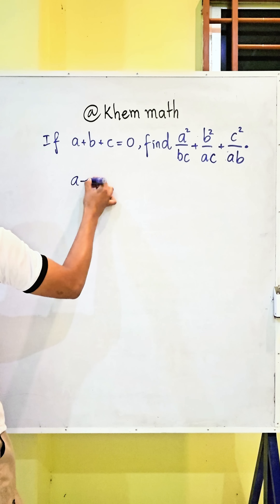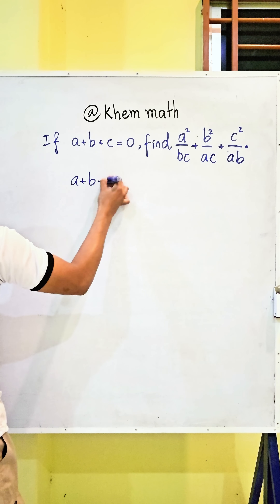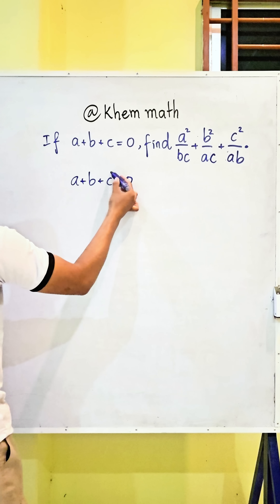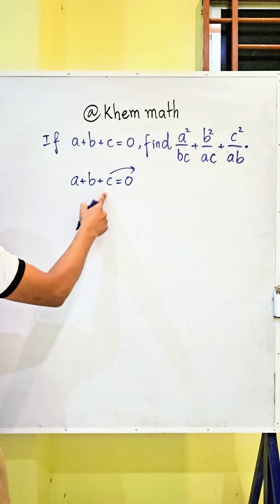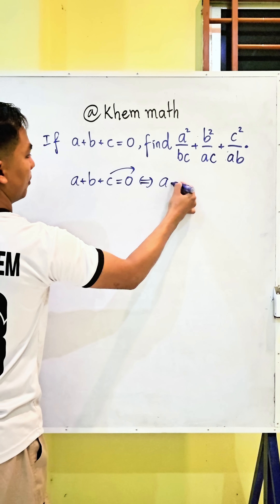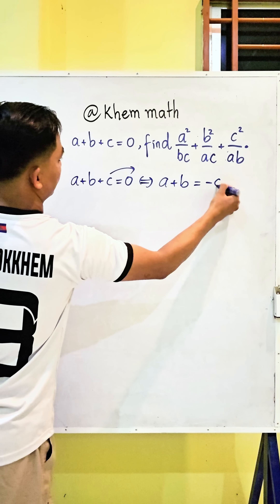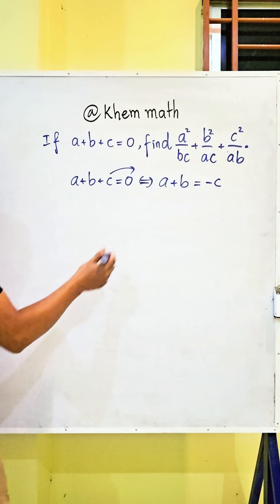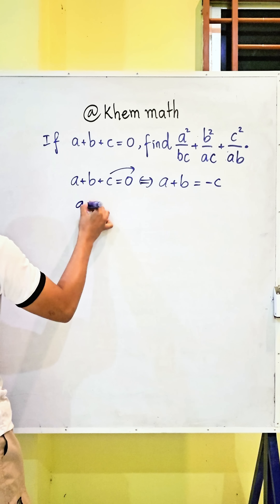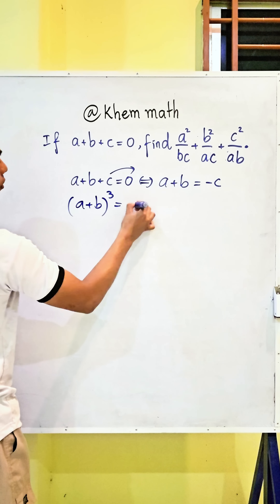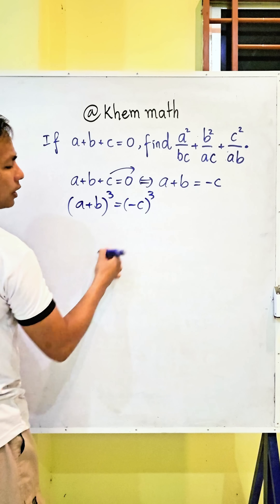We have a plus b plus c equals zero. First, I take c to the right hand side, and we get a plus b equals negative c. Then I raise this equation to the power of three, so we get a plus b to the power three equals negative c to the power three.